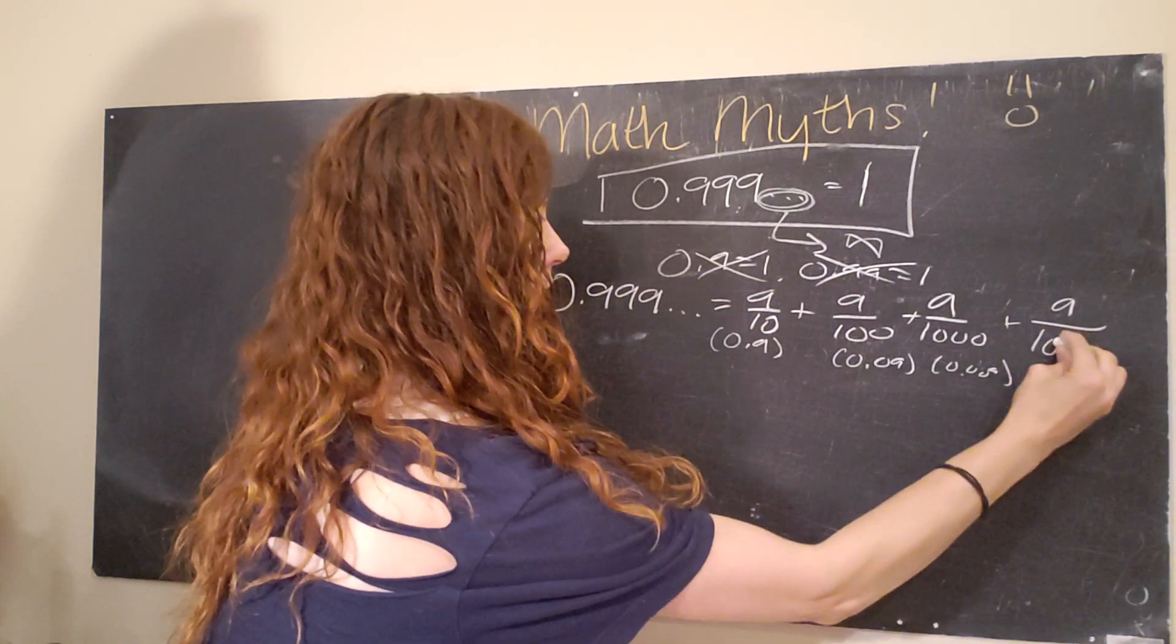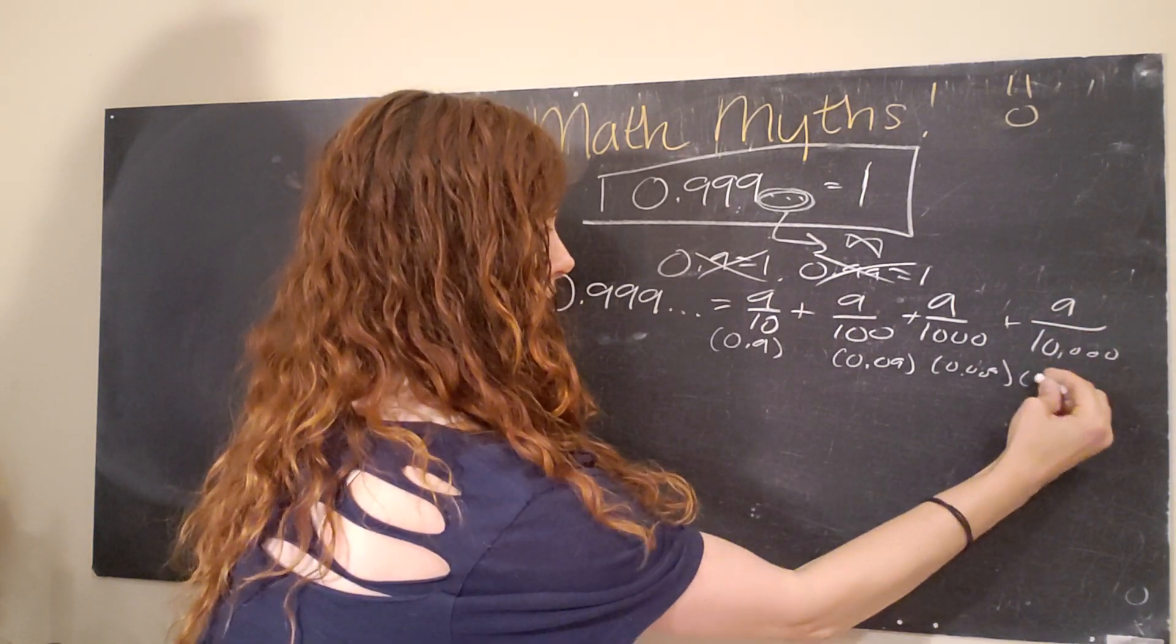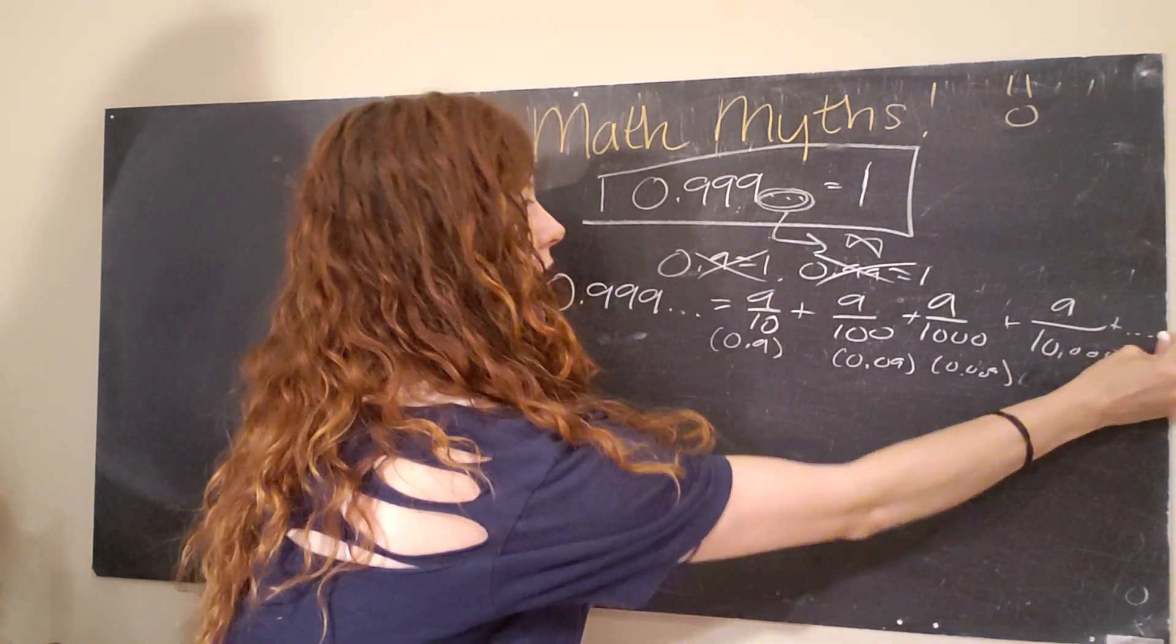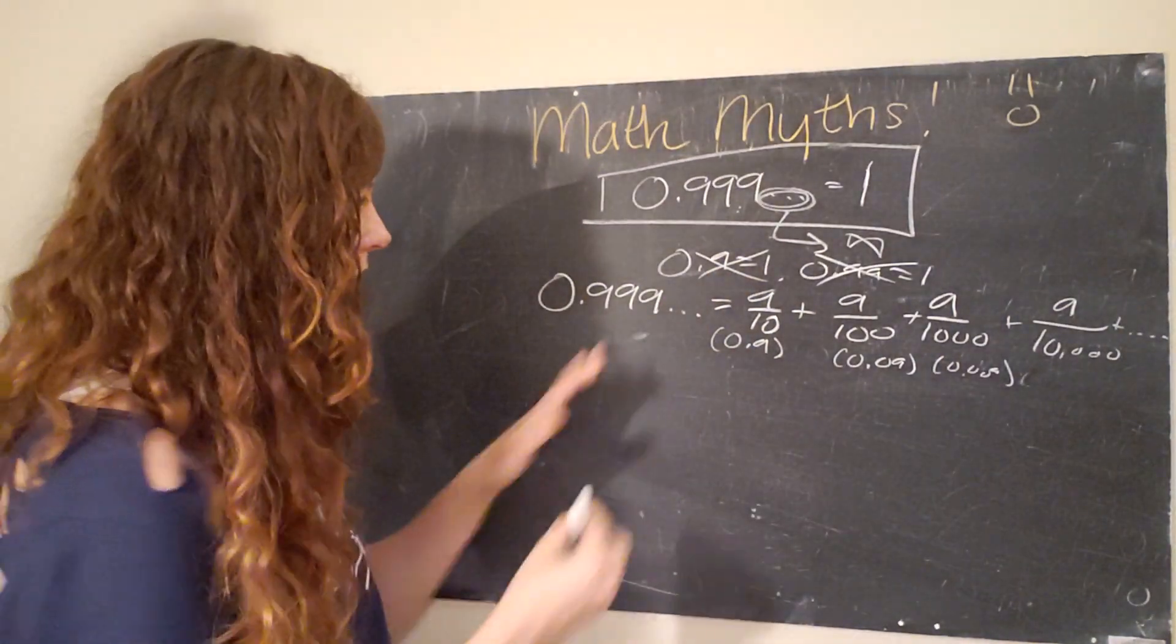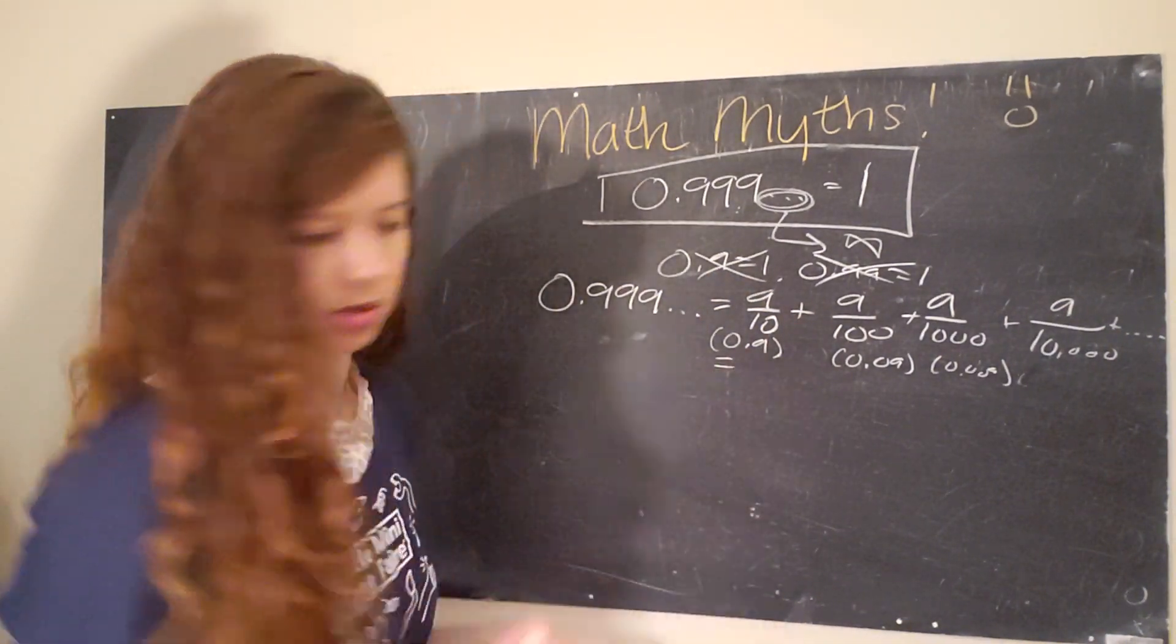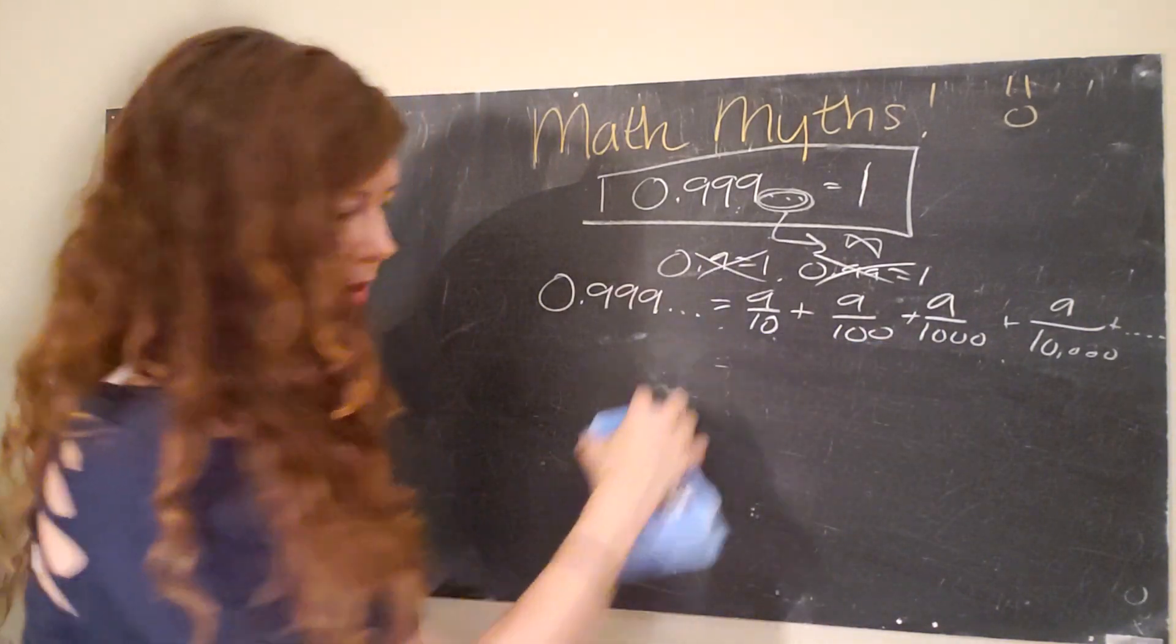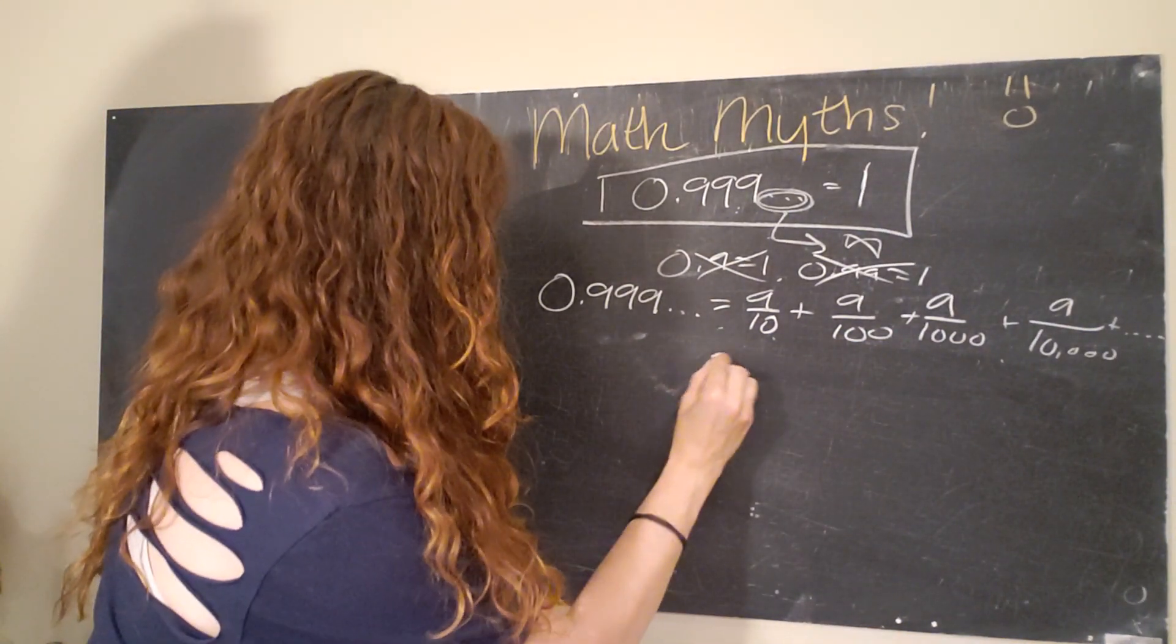So this can be written as 0.9 plus 9 over 100, which is 0.09 plus 9 over 10,000. Again, you get the point. And then it keeps going on forever. Okay, so now let's rewrite this.